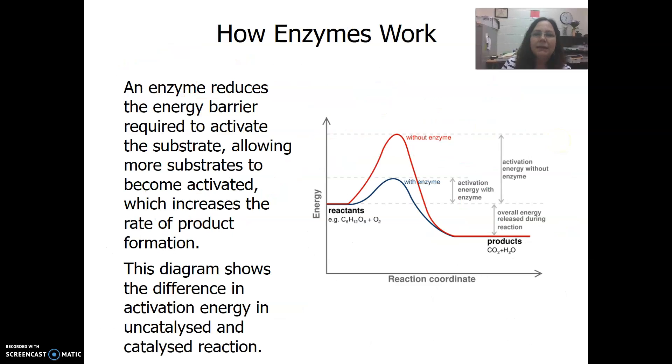And then that same enzyme can be used over and over and over again repeatedly. And this is a graph to show you the activation energy without the enzyme for a particular chemical reaction. Actually, this is cellular respiration. I don't know if you remember, the reactants are glucose and oxygen. The products are carbon dioxide and water plus ATP. That's not listed on here. But there's a certain amount of energy that cellular respiration requires without the enzyme.